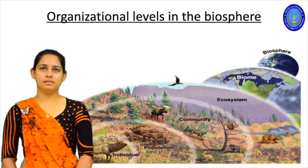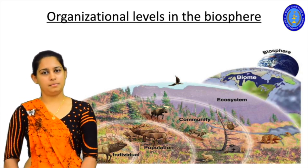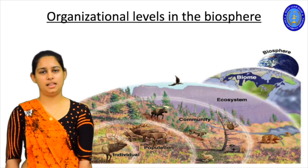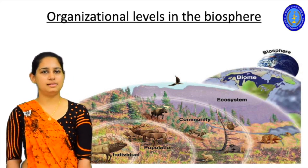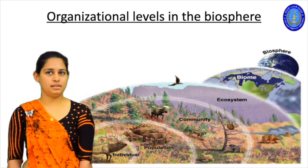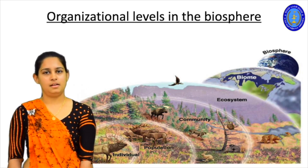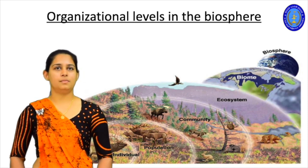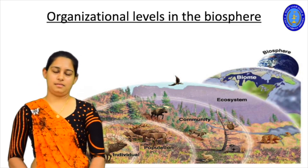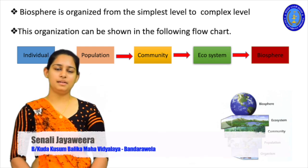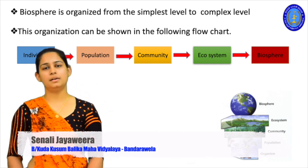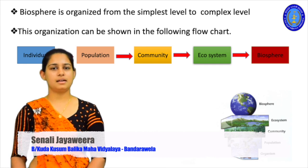Next in this lesson we have to talk about the organizational levels in the biosphere. When we talk about the biosphere there are different types of organizational levels. In this diagram you can see different organizational levels starting from the individual, then the population, community, ecosystem, and the biosphere. The biosphere is normally organized from a simple level to a complex level, and we can consider these organizational levels from simple to complex starting from the individual.